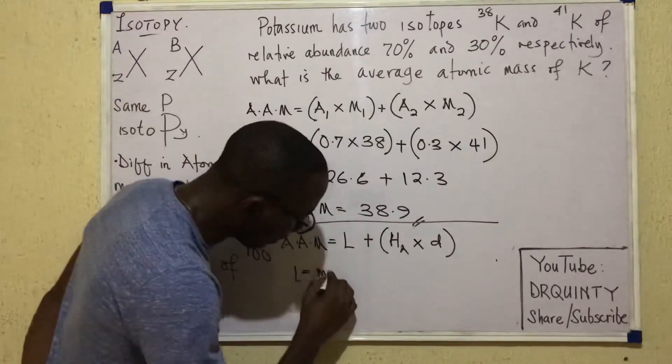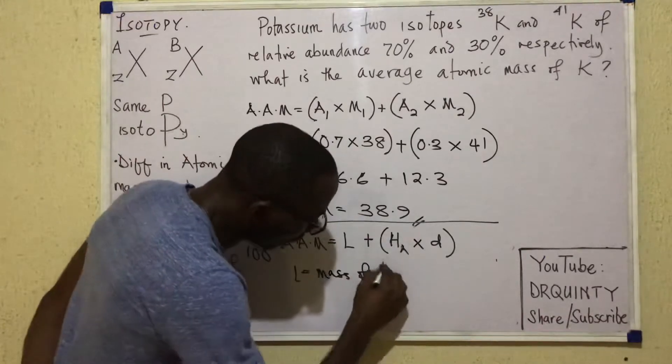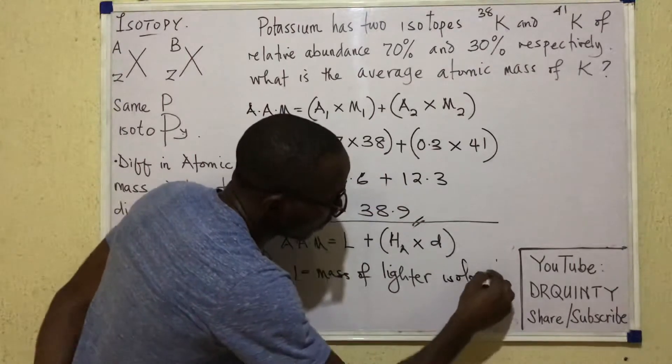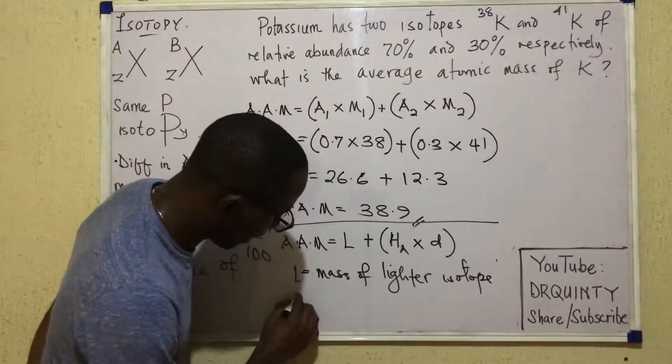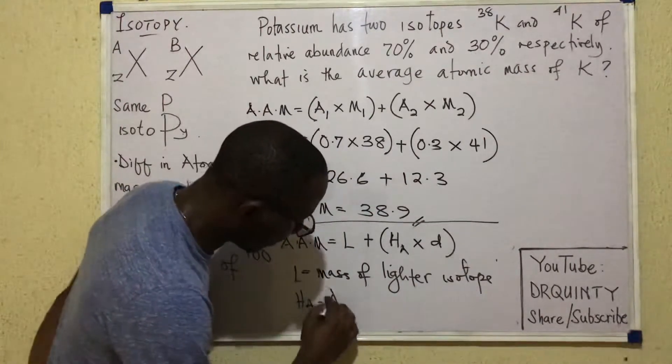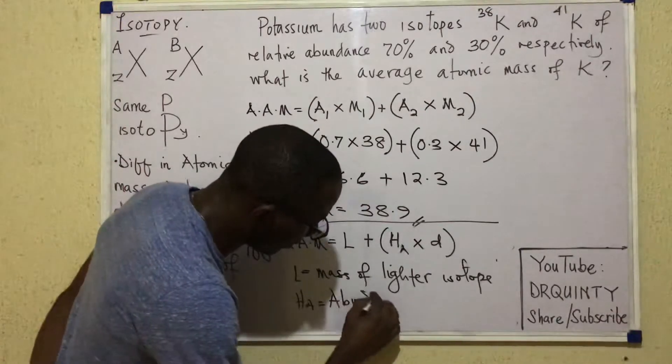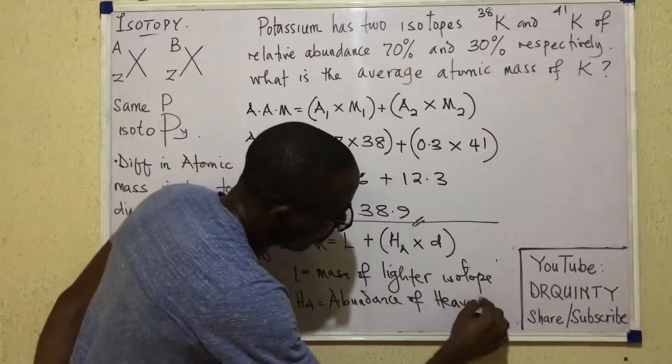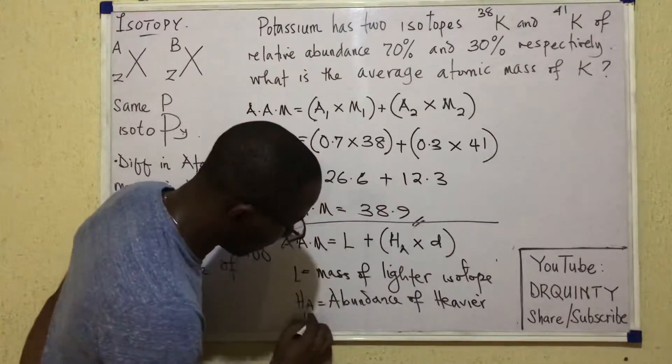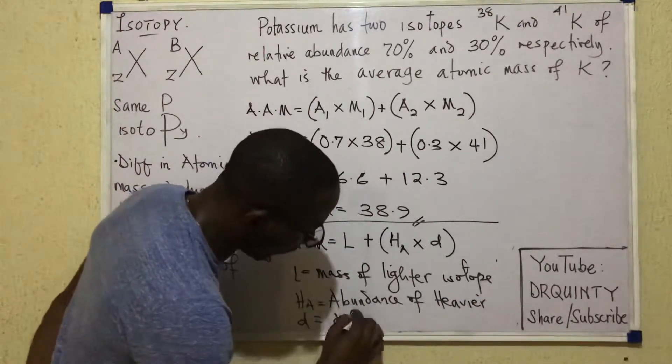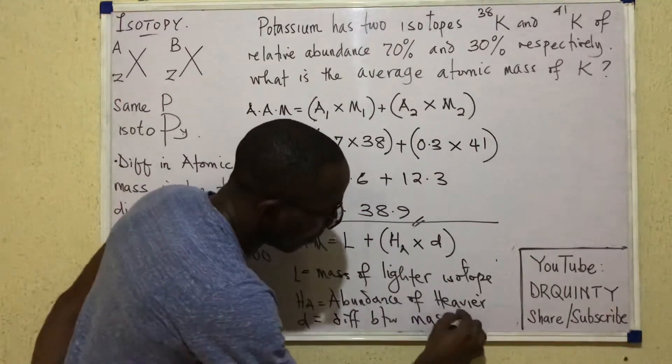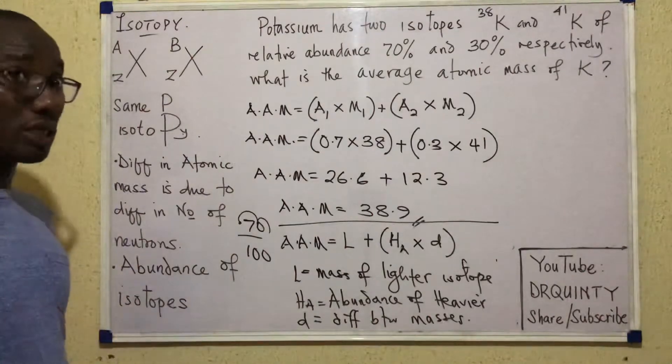So average atomic mass is equal to light plus HA times D. So what is L? L is the mass of the lighter isotope. And what is HA? It is the abundance of the heavier isotope. And then what is D? D is the difference between the isotopic masses.